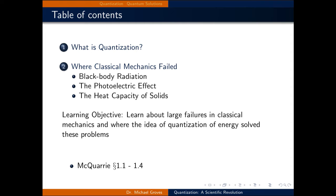The first is a brief description of what it means for something to be quantized, and the second is to discuss examples where classical mechanics failed to explain physical phenomena, including the spectrum of blackbody radiation, the photoelectric effect, and the heat capacity of solids, and how the idea of quantization solved these problems.